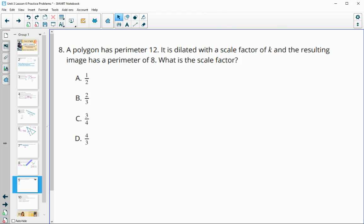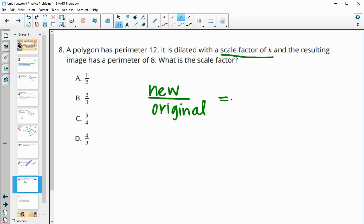So number eight, a polygon has a perimeter of 12 and it's dilated by a scale factor of K. And the resulting image has a perimeter of 8. So what's the scale factor? So remember for scale factor, you do new measurement divided by original. So our new perimeter is 8. Our original perimeter was 12. And then we can simplify those by dividing by 4. So 8 divided by 4 is 2. 12 divided by 4 is 3. And we get a scale factor of two thirds.